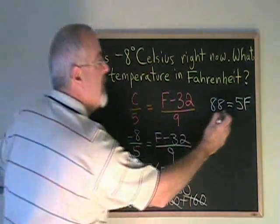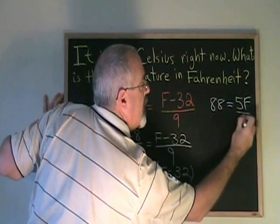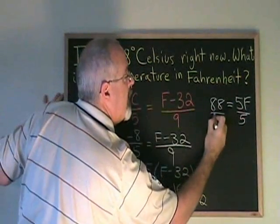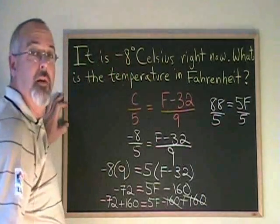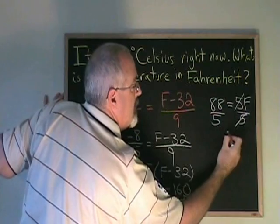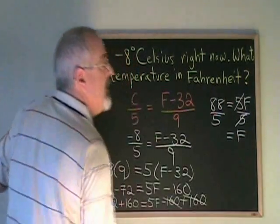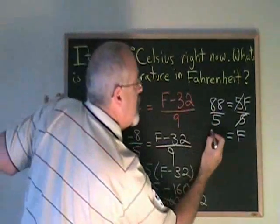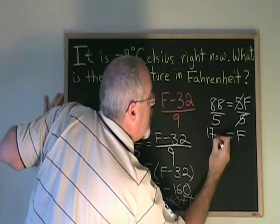Now all I have to do is divide both sides by 5. My F is being multiplied by a 5, so I divide that side by a 5. What I do on one side, I have to do on the other. I am dividing both sides by 5. These cancel. My F is isolated and is equal to 88 divided by 5, which is equal to 17.6.